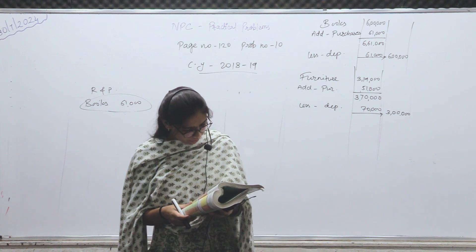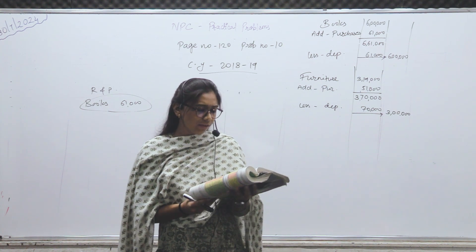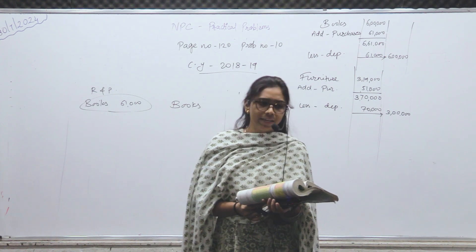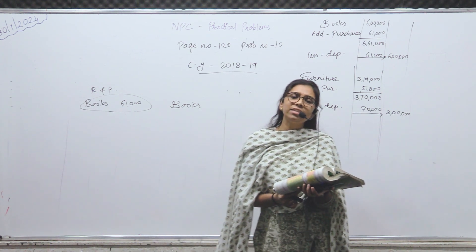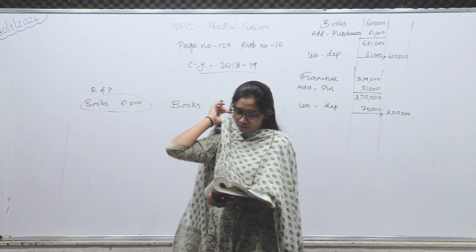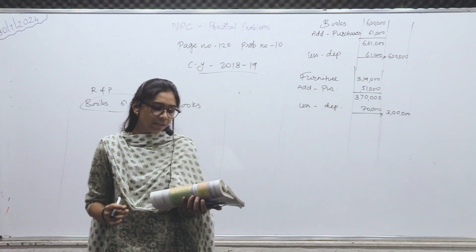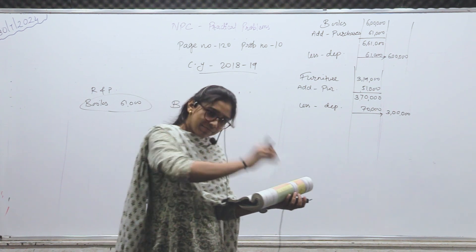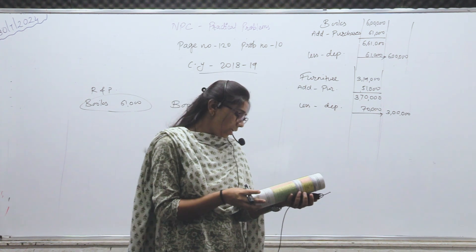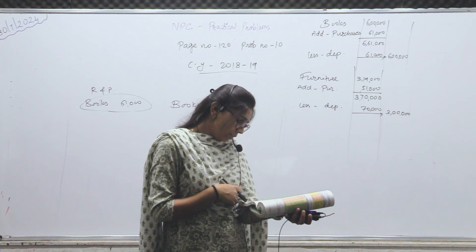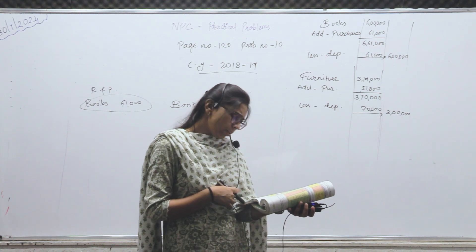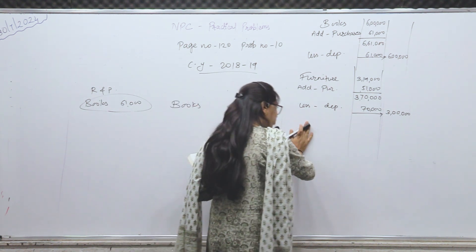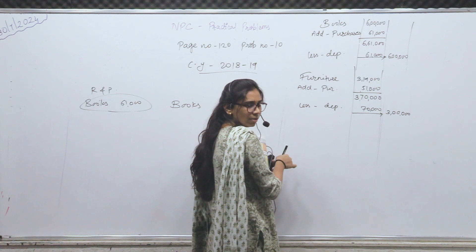Next — stationery, building. Stationery — resident payment। Fixed deposit — what is the treatment? Fixed deposit 31st March 2019 — we have more fixed deposit investment — 8,50,000। Opening fixed deposit given — 9,10,000।